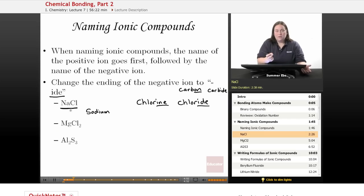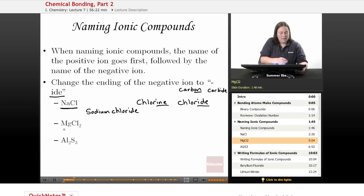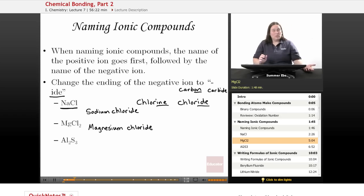We have sodium and chlorine, the negative ion. Change the ending to chloride—sodium chloride. Next, our elements are magnesium and chlorine. Magnesium is in group two with a +2 oxidation number, so it's the positive ion and goes first. Chlorine is the negative ion. Change the ending to -ide: magnesium chloride.